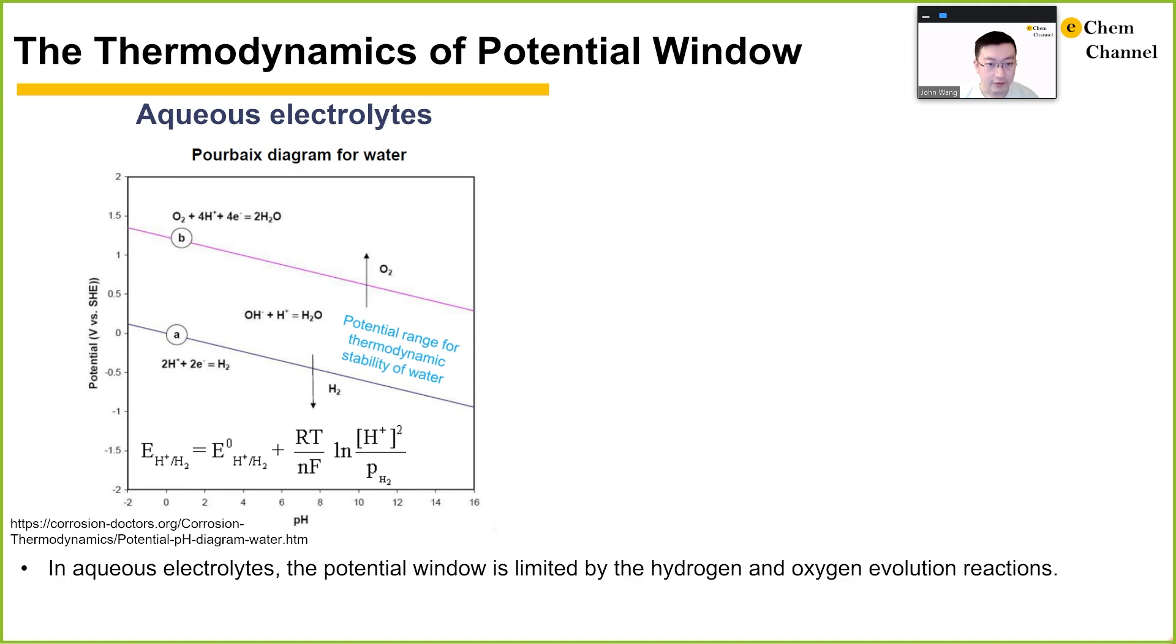The thermodynamics of electrolytes are best illustrated in the aqueous cases where the Pourbaix diagram exists. Pourbaix diagrams are essentially phase diagrams that map the conditions of potential and pH where various redox species are thermodynamically stable. In this example of the Pourbaix diagram of water, applying a potential lower than the black line will result in water breaking down into hydrogen, and applying a potential higher than the pink line will cause oxygen evolution reactions. Water is only stable within the two limits. This limitation can be determined as a function of pH by the Nernst equation, as shown in the example of the hydrogen evolution reaction here.